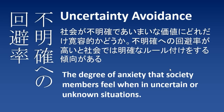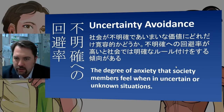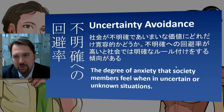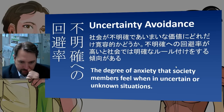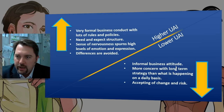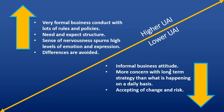Next is uncertainty avoidance — the degree to which a society is comfortable without a strict plan for the near future, or going into unknown situations without knowing exactly what will happen. A higher UAI score means more formality: you need more rules, more policies, and adherence to strict structure while avoiding differences. A lower UAI means more informality — you're more accepting of risk and ambiguity.